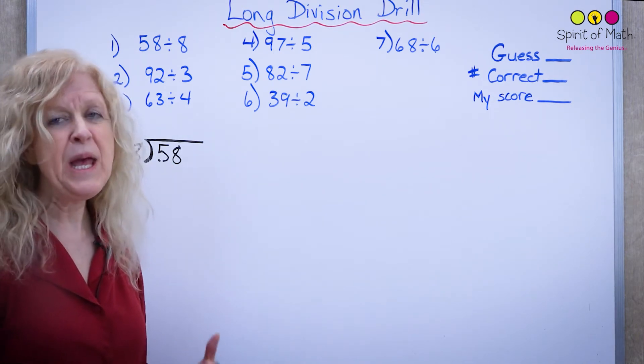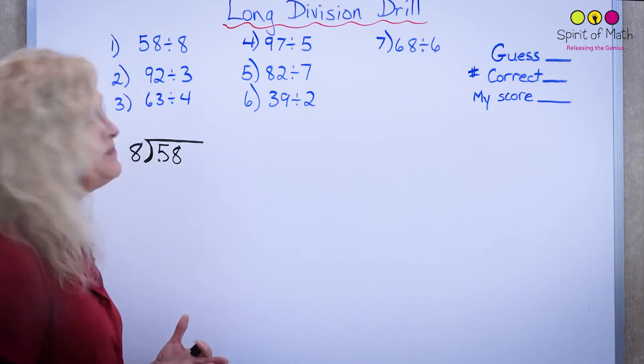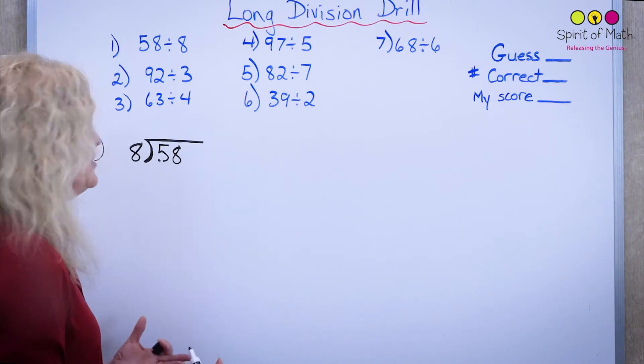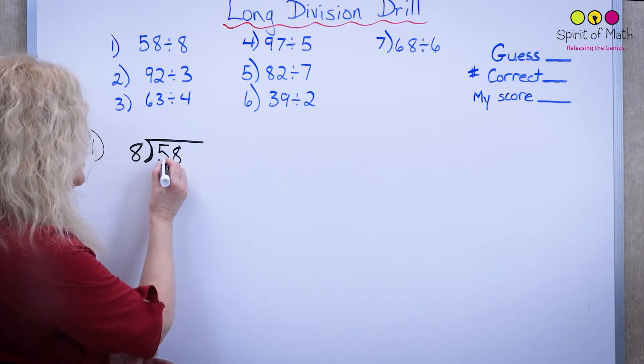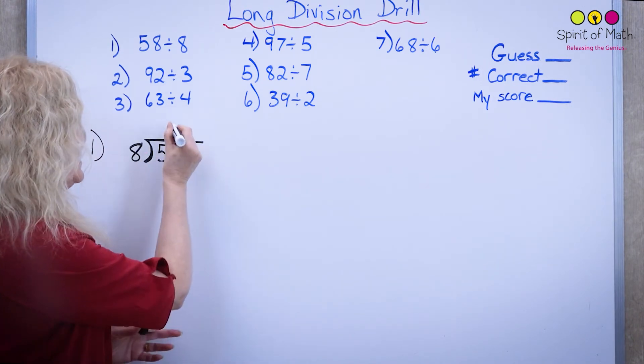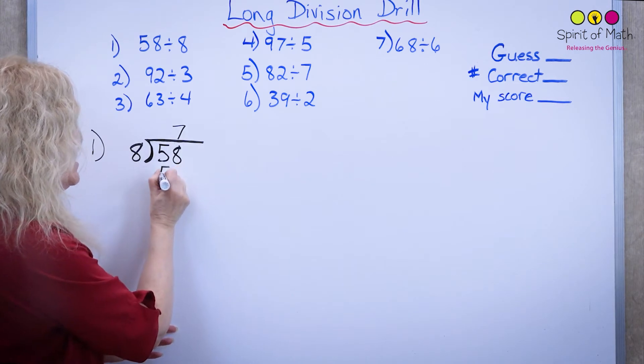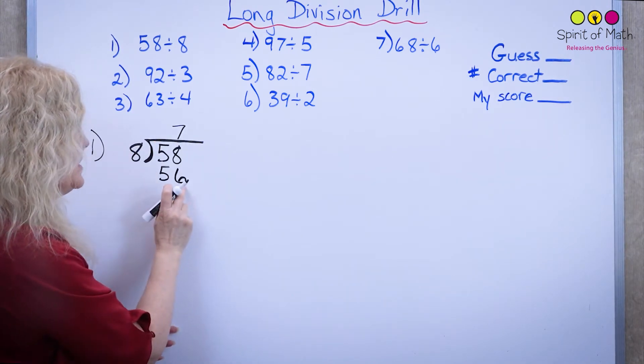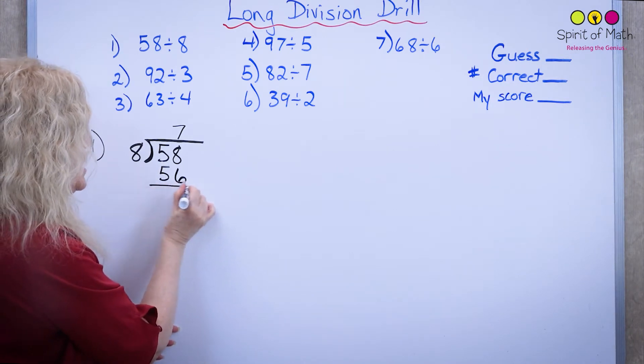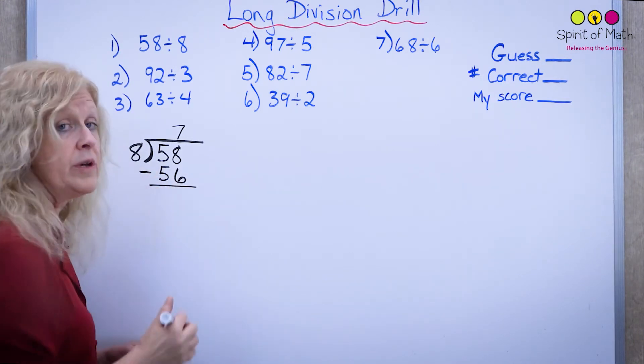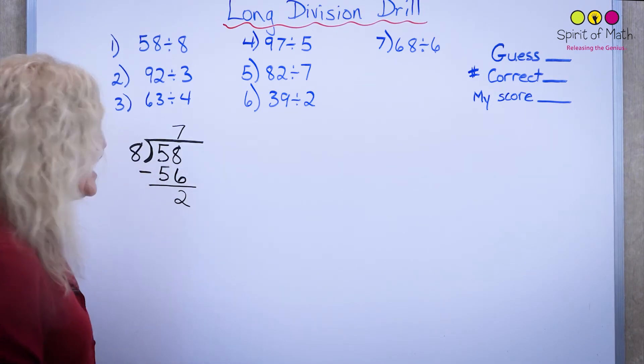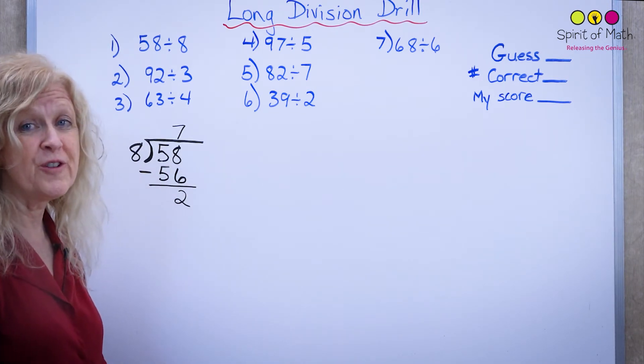So you're going to find out how many times 8 can go into 58. That one's kind of easy because it's just 8 times what is equal to 58 and close to it. It's like short division. So 8 times 7 is 56. So that's the closest one. You write 56, then you subtract that to find out what the remainder is and the remainder is 2. That would be all you'd have to do for the first one.